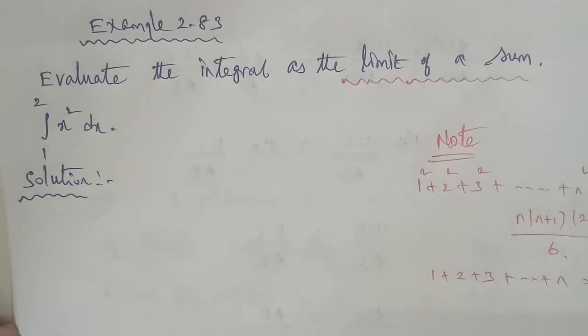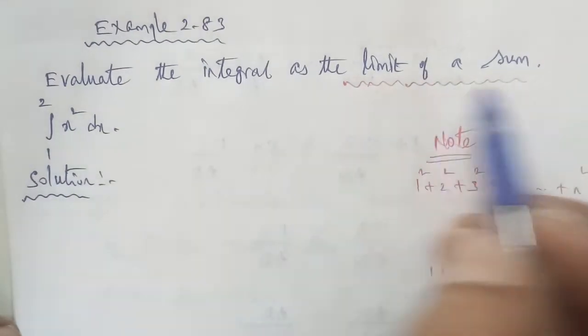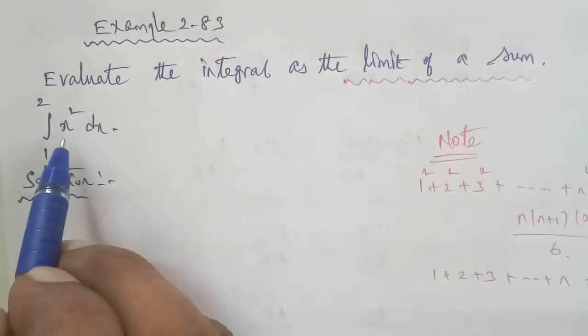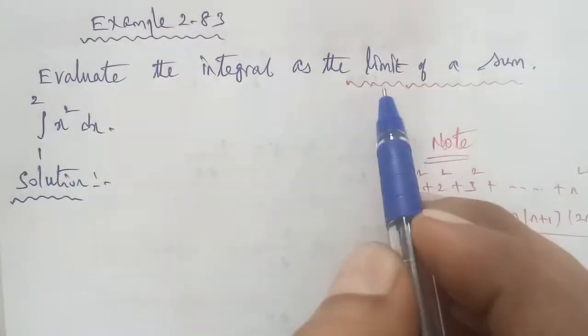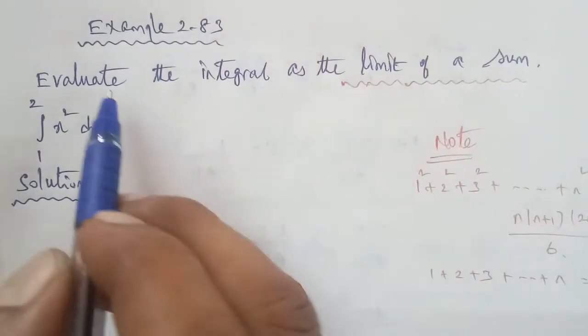Hi students, I am Gokinath, 12th Business Maths, exam 2.83. You have already studied the integral as the limit of a sum. The problem is integral 1 to 2 of x squared dx. So, this is the limit of sums concept to use.